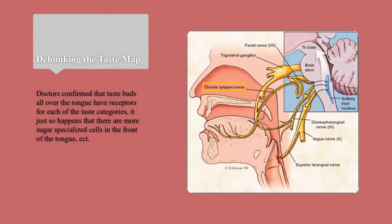In 1965, an interesting discovery occurred. A surgery patient had a nerve cut that should have stopped all taste from being perceived in the front of the mouth — where the so-called sweetness center of the tongue is — and yet the patient reported absolutely no loss of taste overall. In fact, the patient could perceive sweetness even stronger. This led doctors to confirm that taste buds all over the tongue have receptors for each of the taste categories. It just so happens that there are more sugar-specialized cells in the front of the tongue and so on.